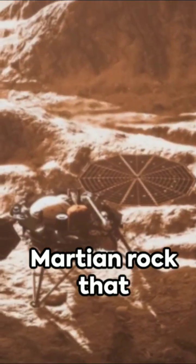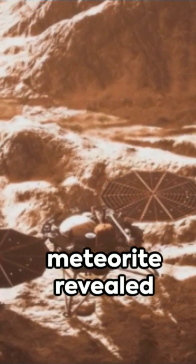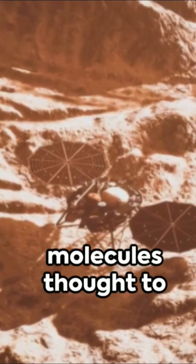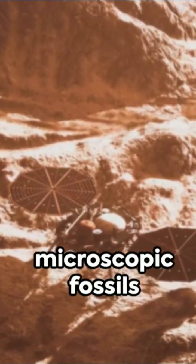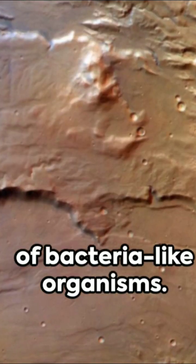Moreover, an ancient Martian rock that fell to Earth as a meteorite revealed the first organic molecules thought to be of Martian origin and possible microscopic fossils of bacteria-like organisms.